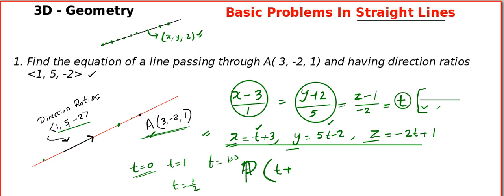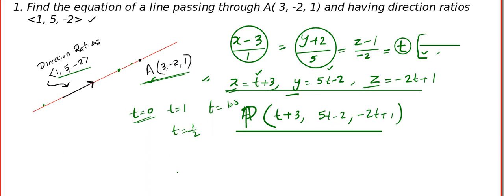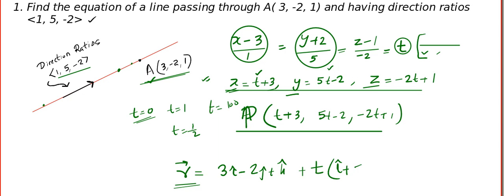The parametric point is (t plus 3, 5t minus 2, minus 2t plus 1). By finding the parametric form, what we access is every point on the line. If you want, you can learn the vector form also, but normally they do not ask the vector form. For those who are really interested, the vector form goes like: you take the point as position vector 3i minus 2j plus k, plus some multiple of the direction vector 1i plus 5j minus 2k.